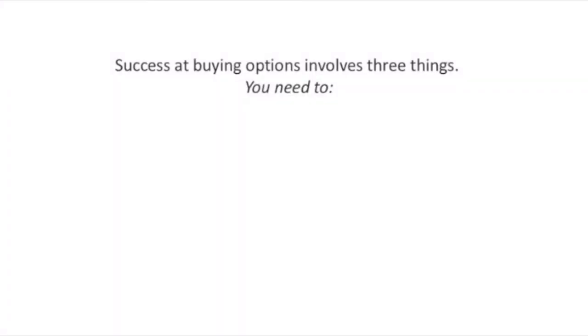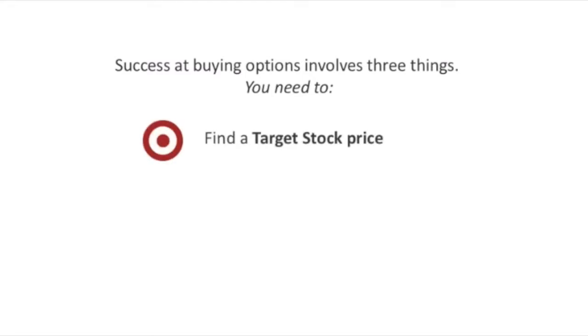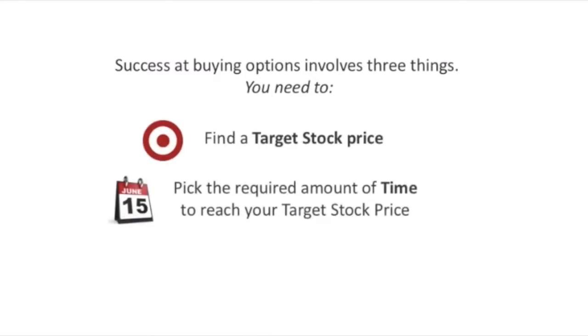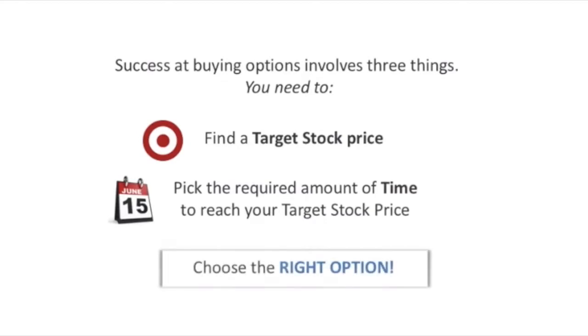Success at buying options involves three things: you need to find a target stock price, pick the required amount of time to reach your target stock price, and then choose the right option.